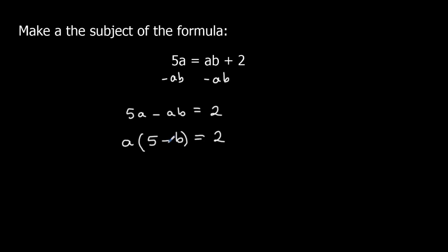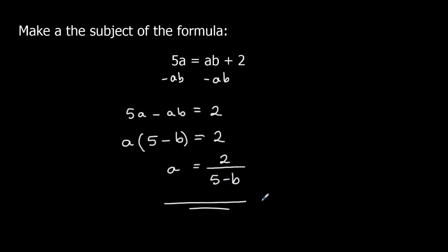And to get rid of the times we divide, so I divide both sides by (5 minus b). So a equals 2 over (5 minus b), and 'a' is the subject of the formula.